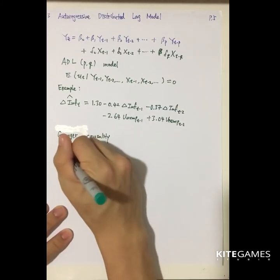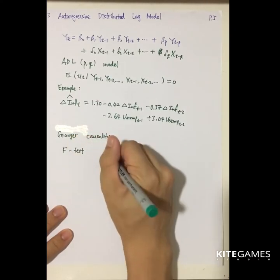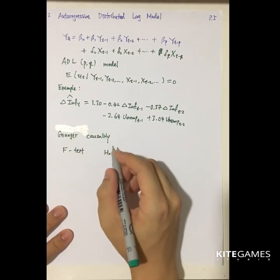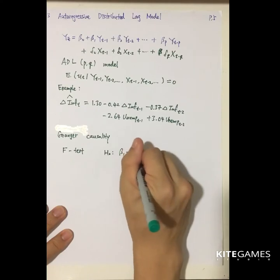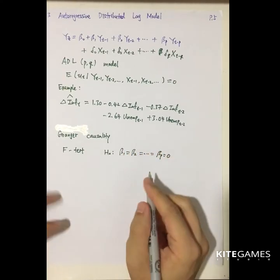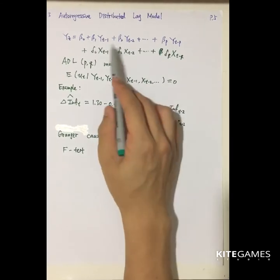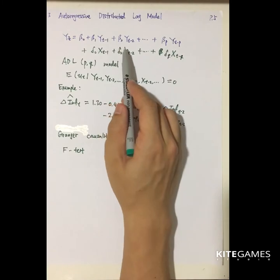So what's the mean of Granger Causality? Granger Causality test is actually an F-test, so he is testing whether the beta 1 equal to beta 2 equal to up to beta p equal to 0.